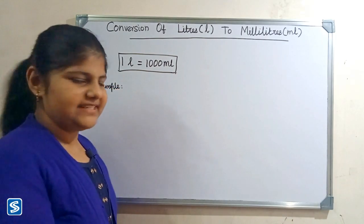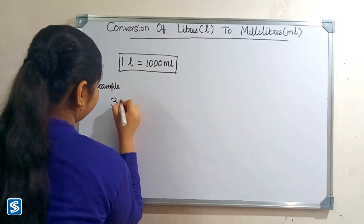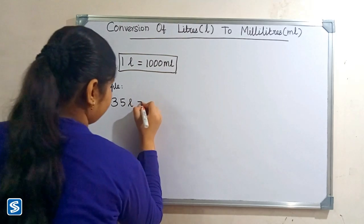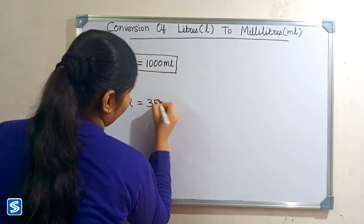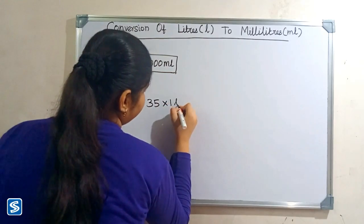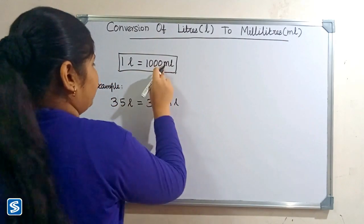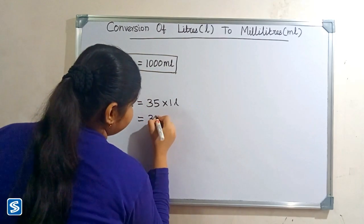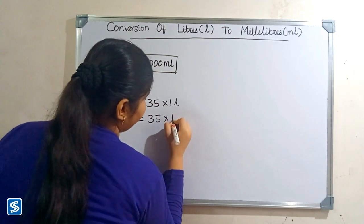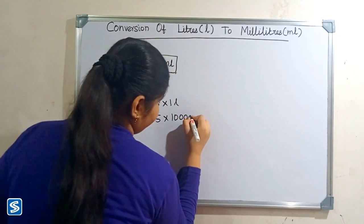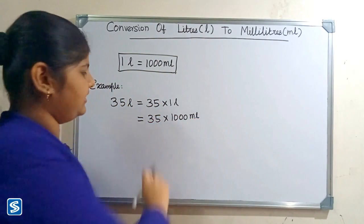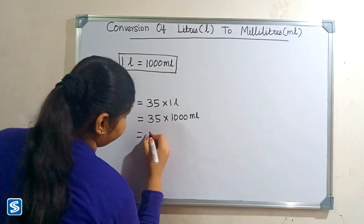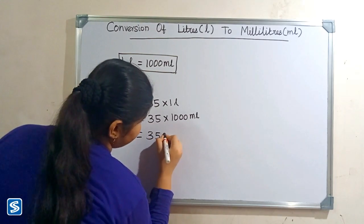For example, we can take 35 liters. 35 liters can be written as 35 multiplied by one liter. Now we have to substitute one thousand milliliters in the place of one liter, so 35 multiplied by one thousand milliliters. 35 multiplied by one thousand milliliters will be 35,000 milliliters.